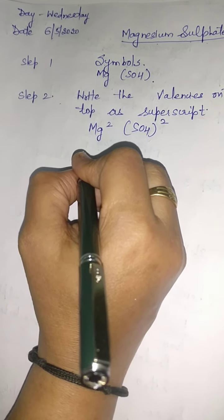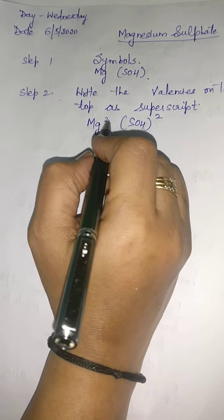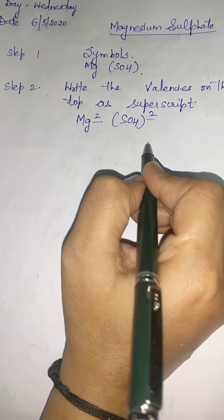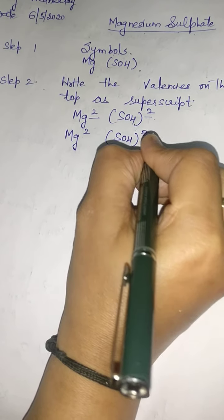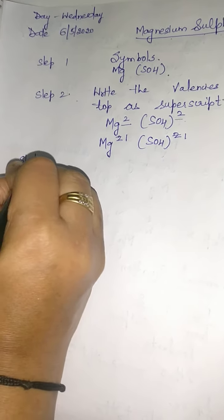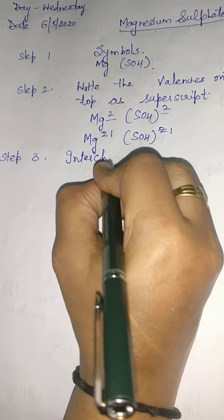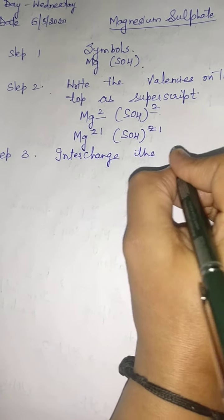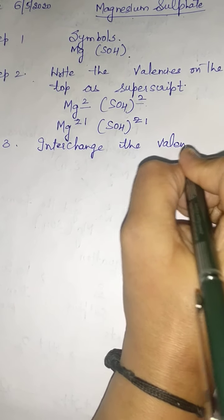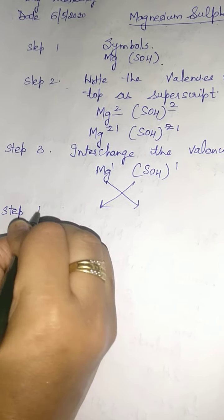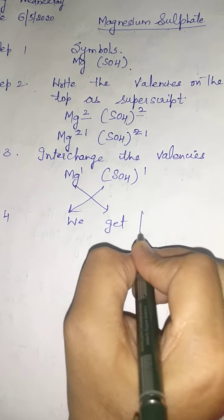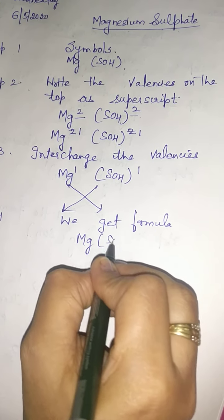As you know, the valencies of magnesium and sulfate are the same, so we will divide them by the common factor. In step 3, interchange the valencies and write them as a subscript. In step 4 we get the formula for magnesium sulfate.